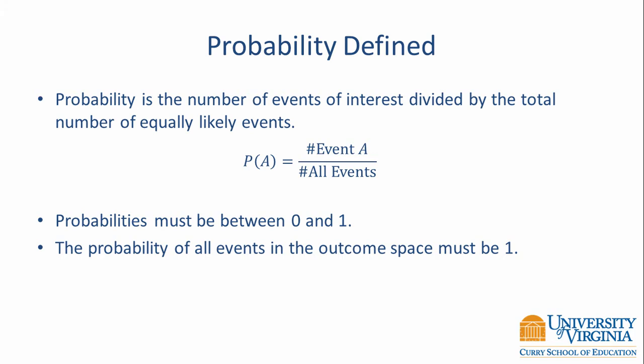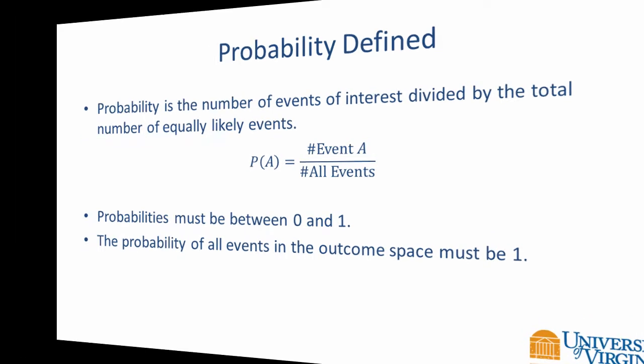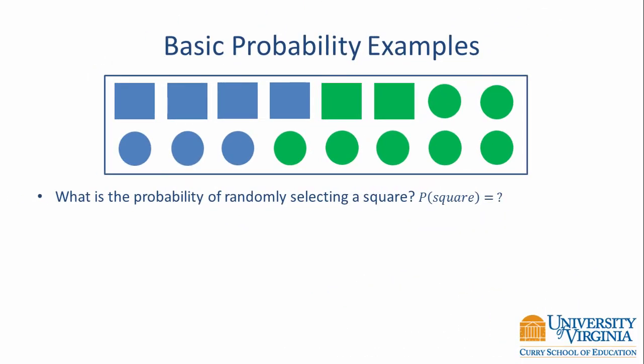Let's look at an example to see how to use this definition to compute probabilities. Here we have a box with 16 shapes in it. Some of the shapes are squares, some are circles, some of them are blue, and some of them are green. Suppose we ask the question: what is the probability of randomly selecting a square?